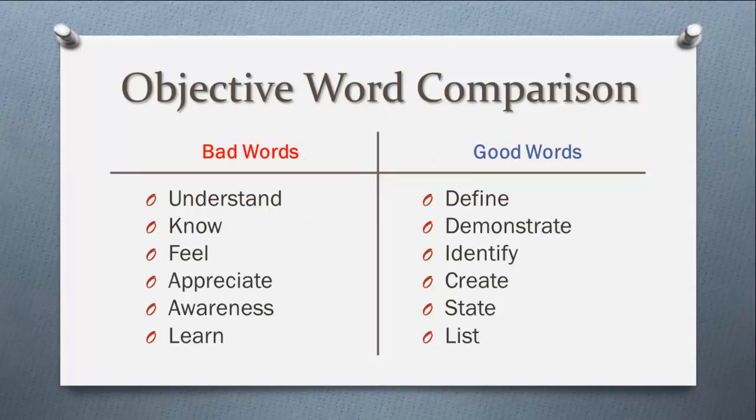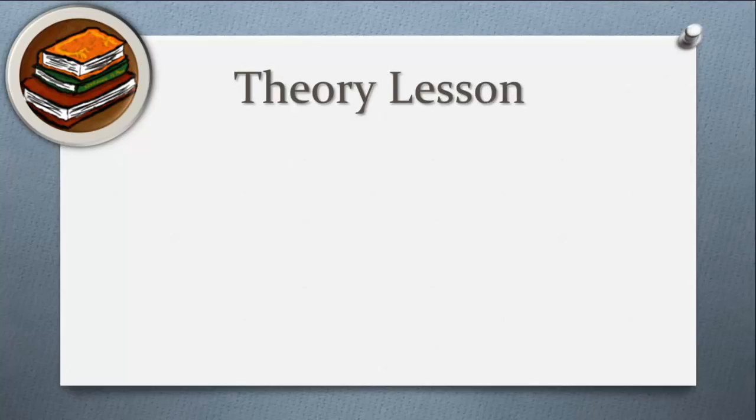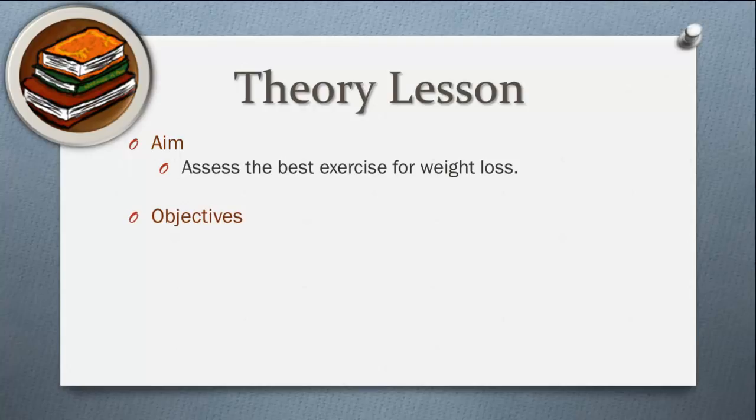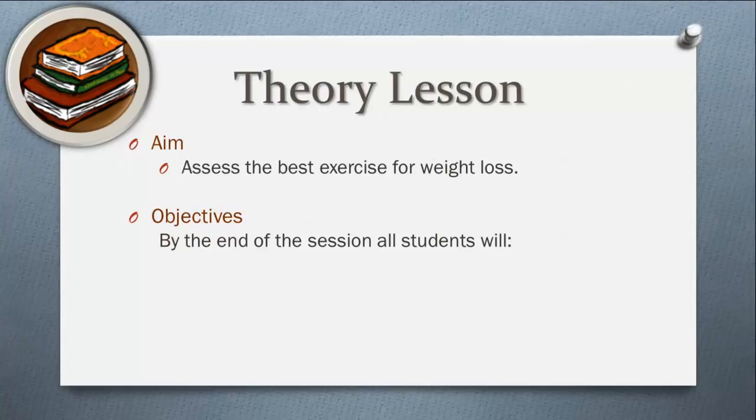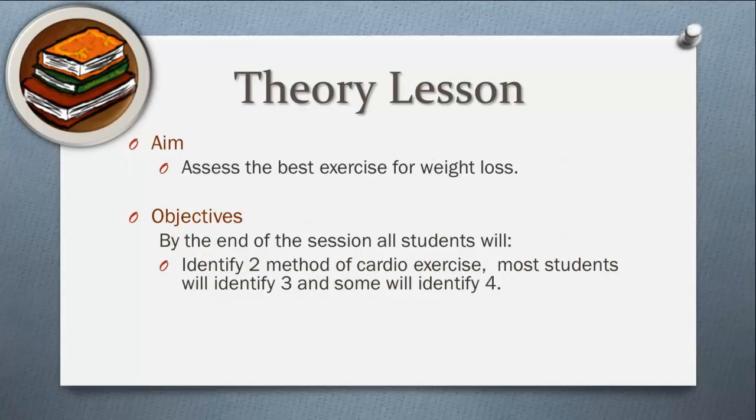So let's have a look at an example of an aim and objective from a theory lesson. Our aim might be to assess the best exercise for weight loss. When writing the objectives, you might find it helpful to write, by the end of the session, all students will. You don't have to repeat it if you write it how it looks here, but this starts every single one of your objectives. Now our first objective is to get students to identify different cardio exercises. Can you see how we are asking some to do more than others? This is called differentiation. You will be learning about this later in the course. Our next objective is to get them to decide which cardio exercise is better. You can see how we are gradually progressing towards the aim.